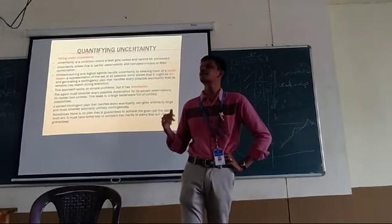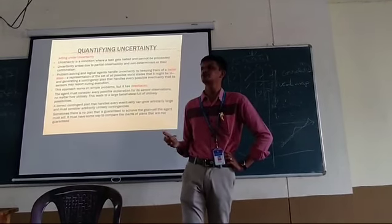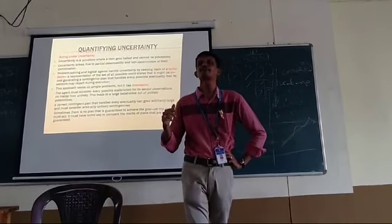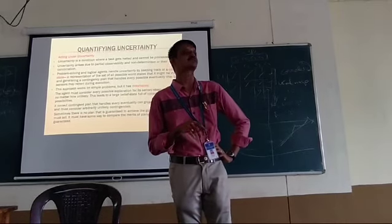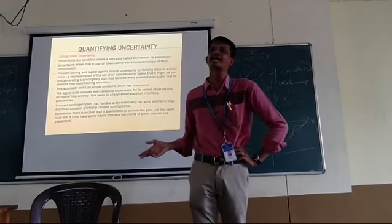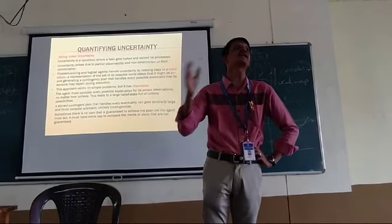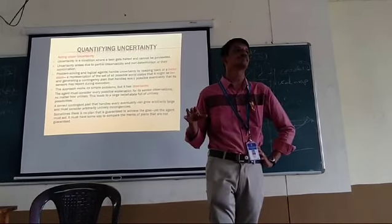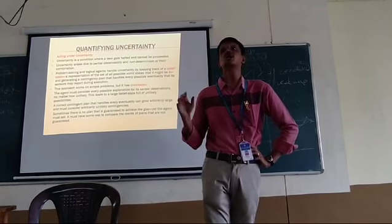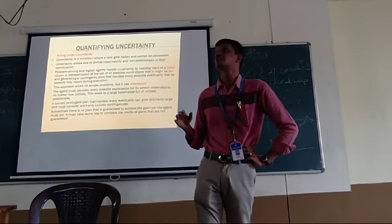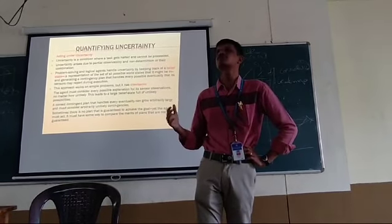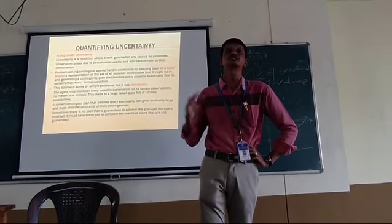Things that happen along the way include: time gaps, traffic jams, and accidents. These are all the uncertainties that occur when you start from the source to the destination.